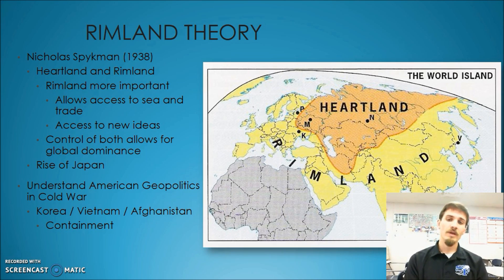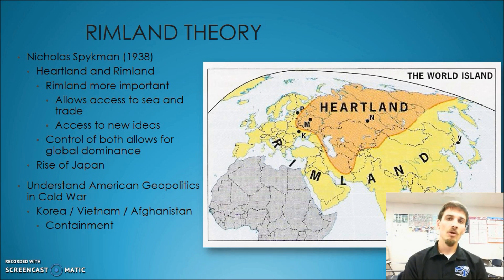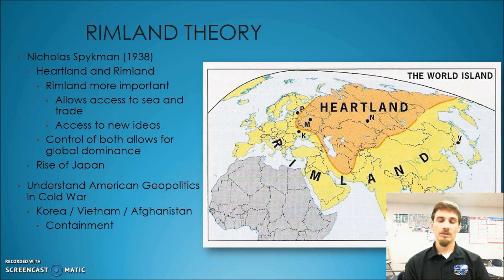So if you were able to control both the rimland and the heartland, this is what Spykman thought would be the place that could not be defeated — kind of this global superpower that nobody would be able to defeat. And so that's going to help you understand a little bit better some of the foreign policy objectives that the Americans have as we move forward into the 20th century.